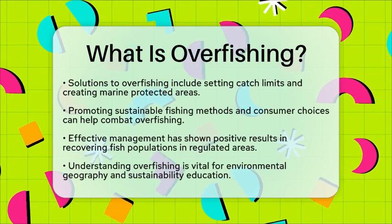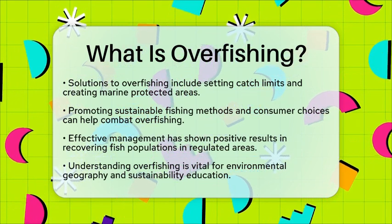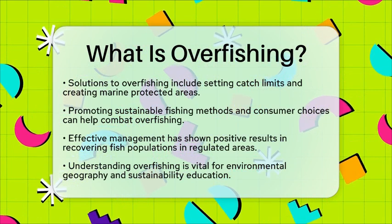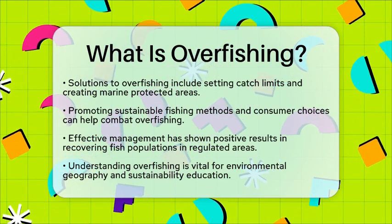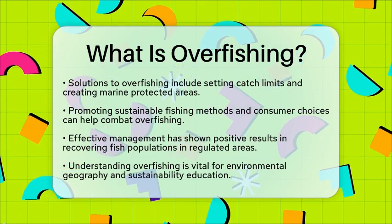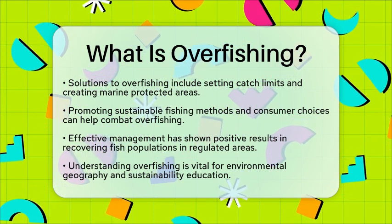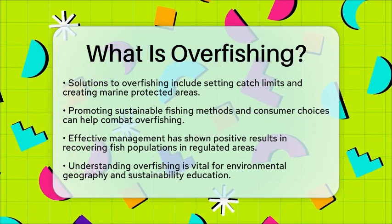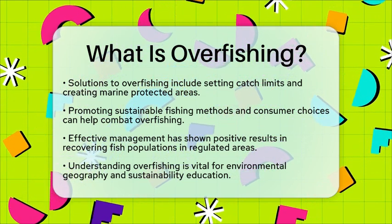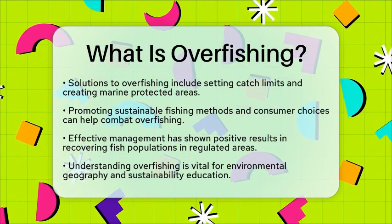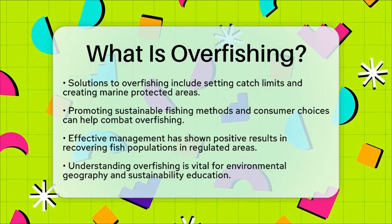In places where strict regulations have been put in place, fish populations have shown signs of recovery, proving that effective management can help mitigate the effects of overfishing. Understanding overfishing is essential in the context of environmental geography and sustainability education. By recognizing the geographical scope and ecological effects of overfishing, we can better appreciate the importance of sustainable practices. This not only protects marine ecosystems, but also ensures food security for communities around the world.